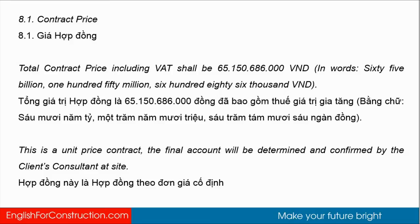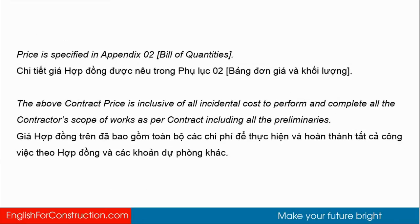This is a unit price contract. The final account will be determined and confirmed by the client consultant at site. The price is specified in Appendix 2, Bill of Quantities. The above contract price is inclusive of all incidental costs to perform and complete all the contractor's works as per contract, including all the preliminaries.